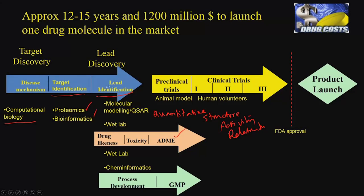Simultaneously when we look at an active lead molecule, we may have to perform experiments to determine all these parameters, or use computational tools to predict drug-likeness, toxicity, ADME, and so on. This course is predominantly going to cover molecular modeling, QSAR, and computational approaches for determining ADME and drug-likeness properties. Of course, one also needs to think about manufacturing the drug in large quantities — process development and bioprocessing — with good manufacturing practices approved by the FDA.